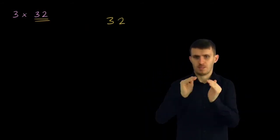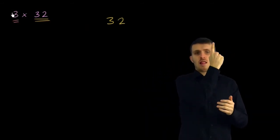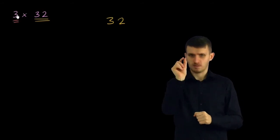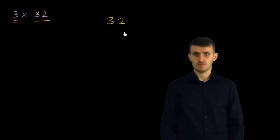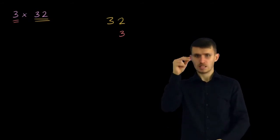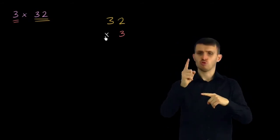And I write the smaller number right below it. And since the smaller number is only one digit, it's only a ones digit, I put that below the ones place on the larger number. So I'll put the 3 right over here. And of course, we can't forget our multiplication symbol.